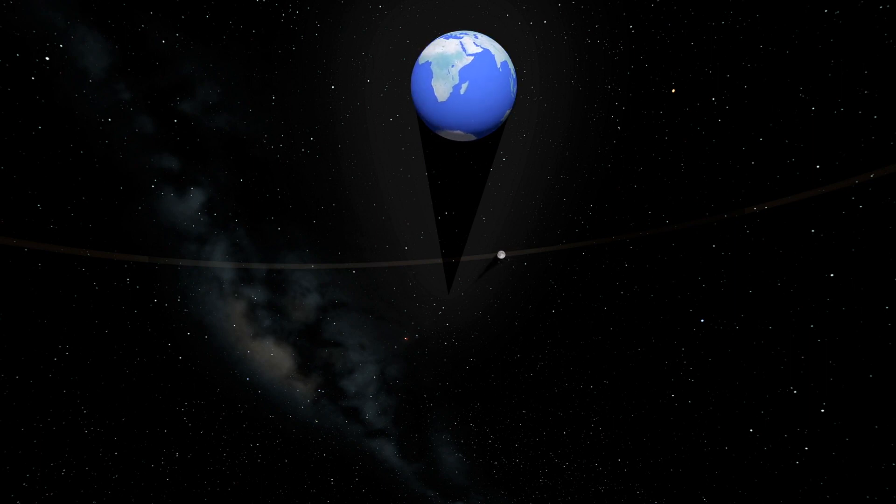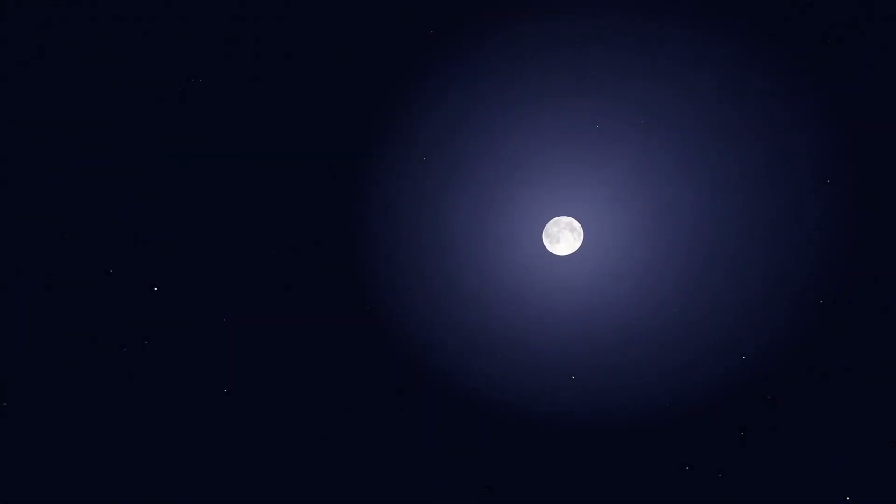People living on the side of the Earth facing the moon will see it moving through Earth's shadow. When the moon lies completely within the shadow, it turns red and is often called a blood moon. The color comes from red light scattered into Earth's shadow by its atmosphere. The shade of red is affected by Earth's clouds and dust.